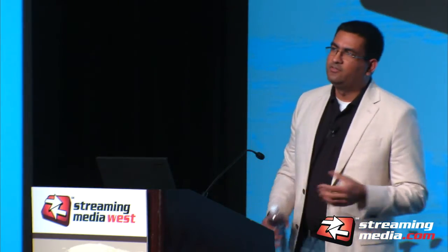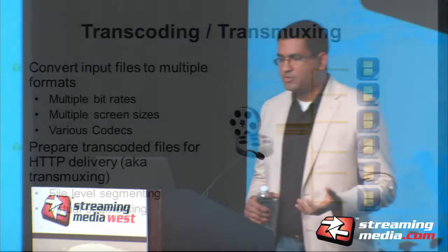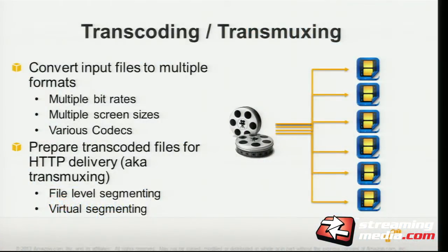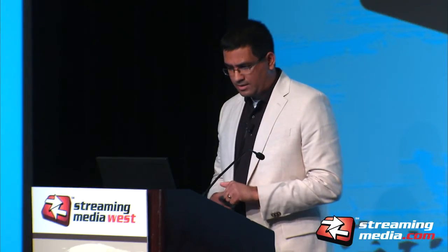Once you've ingested and stored content in the cloud, let's talk about processing that content and creating the different renditions — the different transcodes you need for the different device types you serve. Transcoding is the process of taking your high-resolution source files or mezzanine files and translating them into the various codecs, the right bit rates, and the right screen sizes for the different platforms you're delivering to. In addition, you also need to think about transmuxing — the different containers that you want to package your media files into.